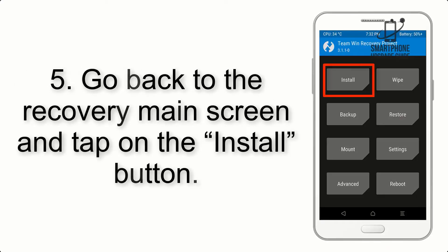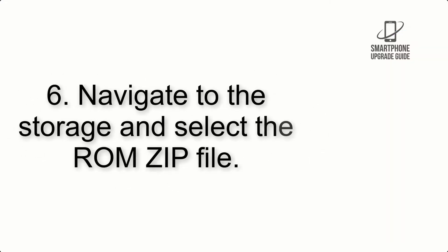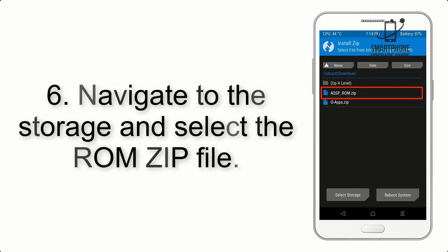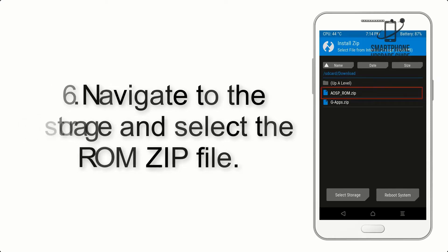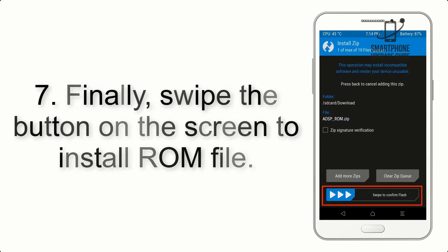Step 5: Go back to the recovery main screen and tap on the Install button. Step 6: Navigate to the storage and select the ROM zip file. Step 7: Finally, swipe the button on the screen to install the ROM file.